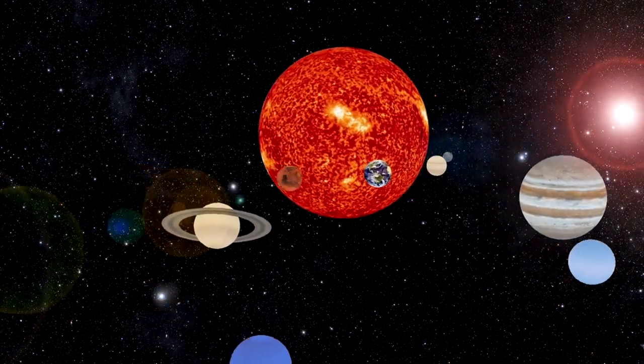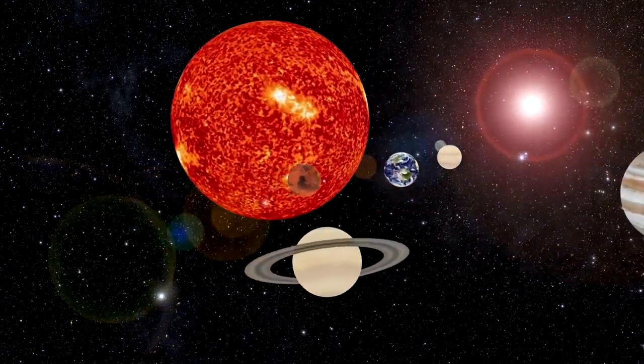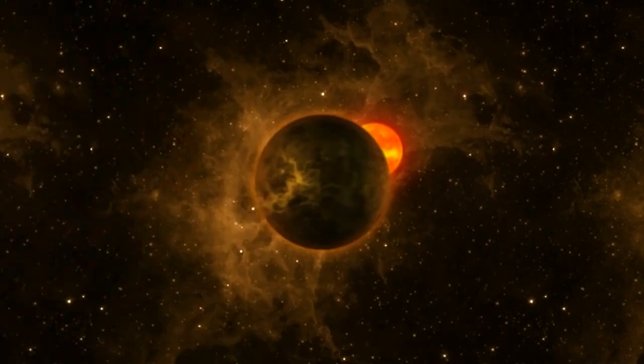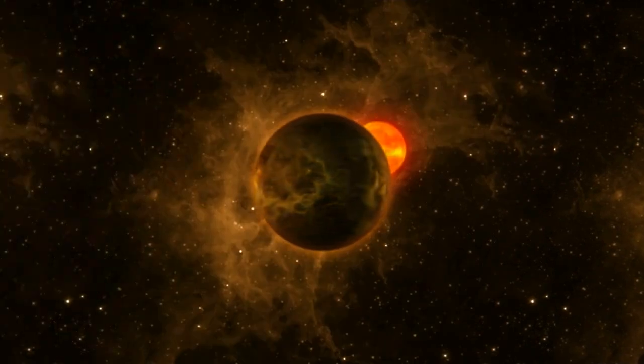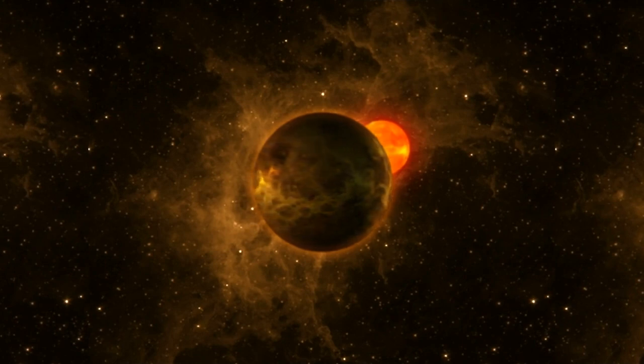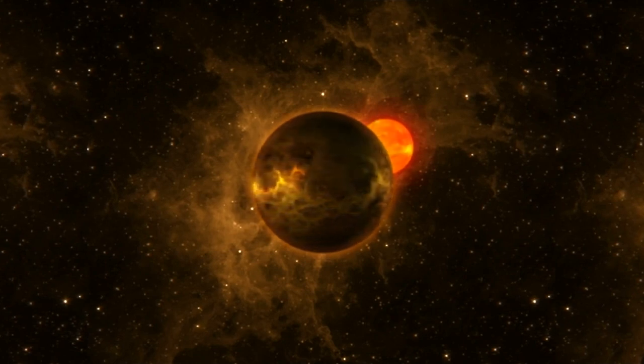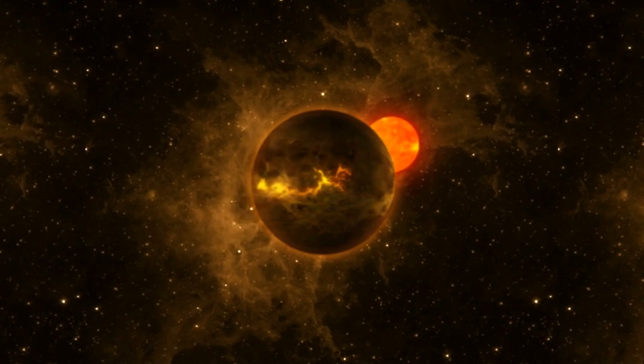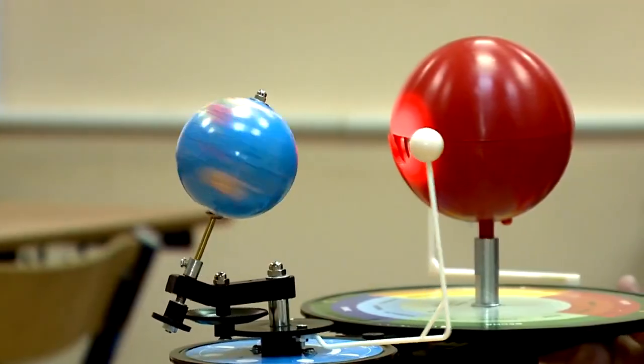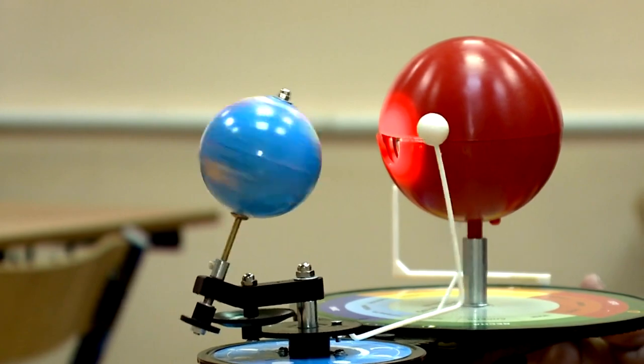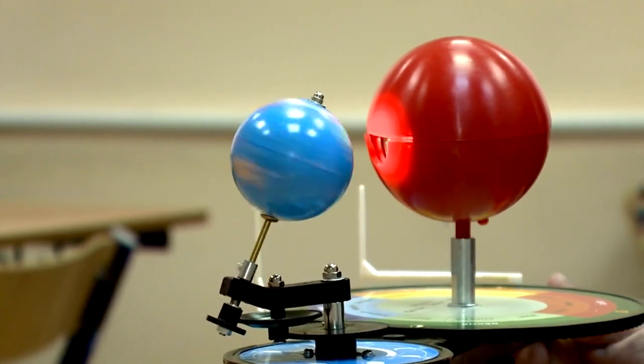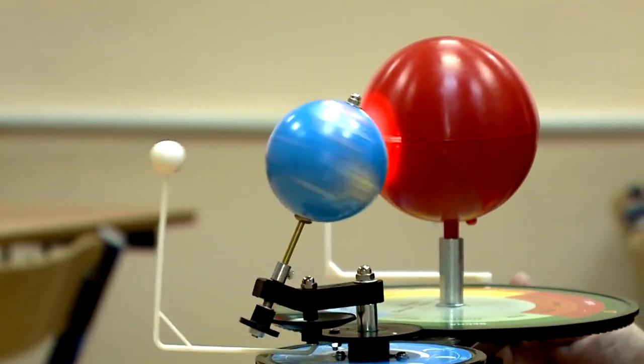Understanding these potential scenarios helps us appreciate the delicate balance of our solar system. The orbits of planets and other celestial bodies are influenced by numerous factors, including gravitational interactions, solar radiation, and the presence of other objects in the solar system. By studying these factors and the interactions between celestial bodies, scientists can gain insights into the stability and evolution of our solar system.